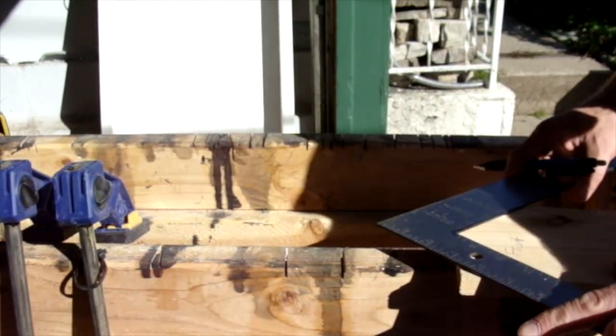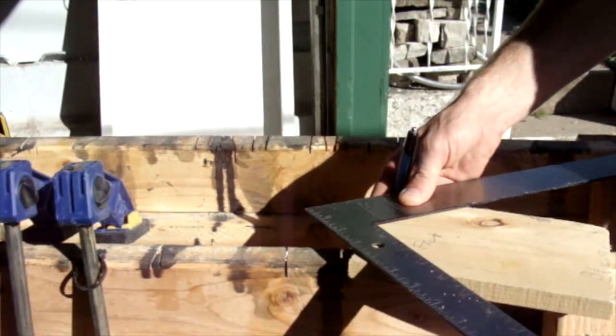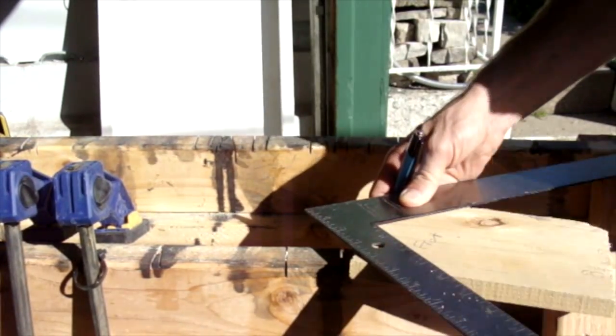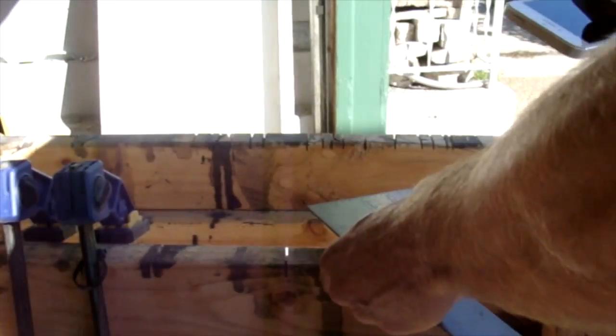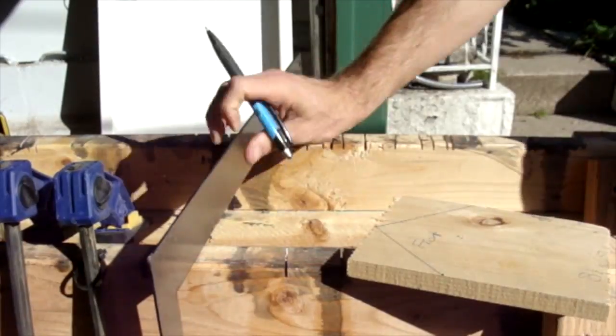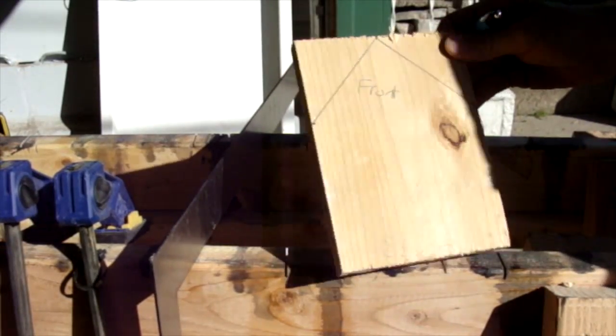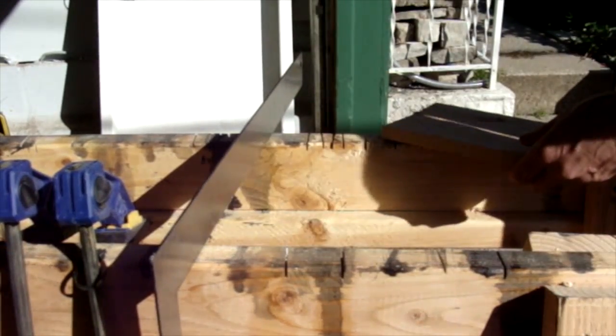And then you're going to connect all of those points so that it makes a 90-degree angle. And if you use a square, it can make an exact 90-degree angle. Cut the back side the same exact way. Then you're going to be ready to nail it together.